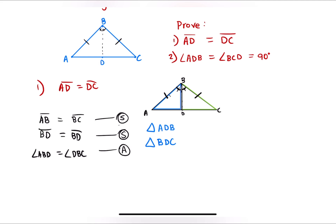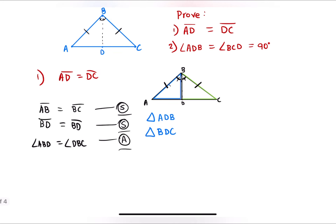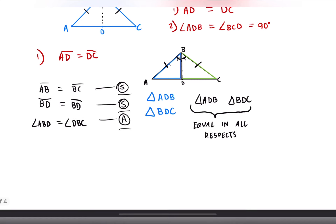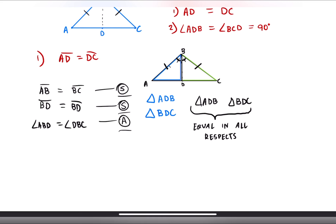So now we have S, A, S. That means we can prove that triangle ADB is congruent to triangle BDC — both of these triangles are equal in all respects. Knowing this, we can also state that both of the corresponding sides are equal. Hence, AD equals DC, which is what we had to prove at the start. So we have proved our first theorem: AD equals DC.